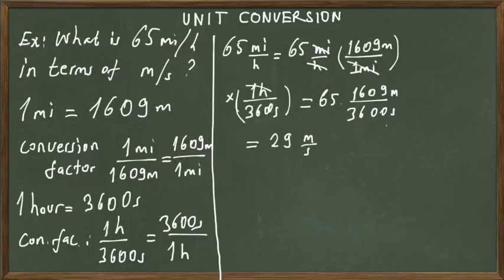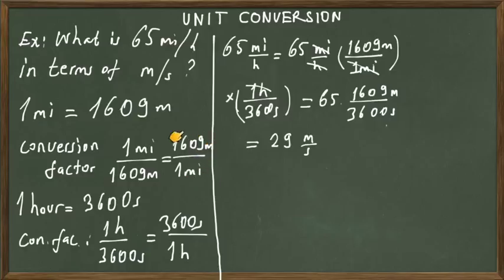These ratios serve differently. If you need to convert meters into miles, you use the first ratio. But if you want to convert miles into meters, you use the second ratio: 1609 meters divided by one mile. Since in this problem we are converting miles into meters, we use that second ratio as our conversion factor.